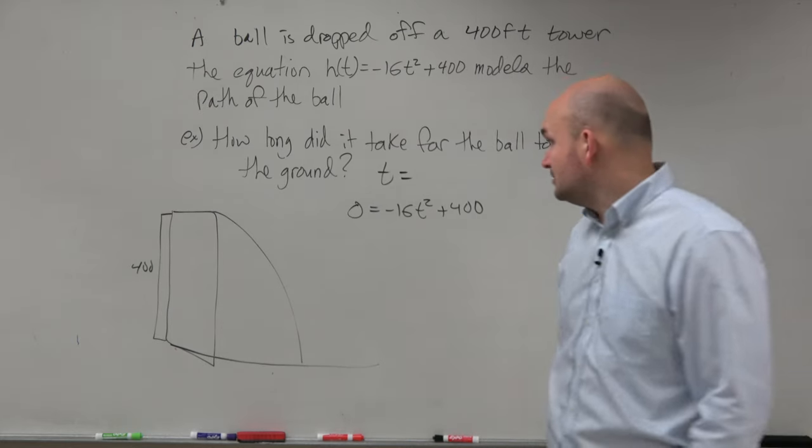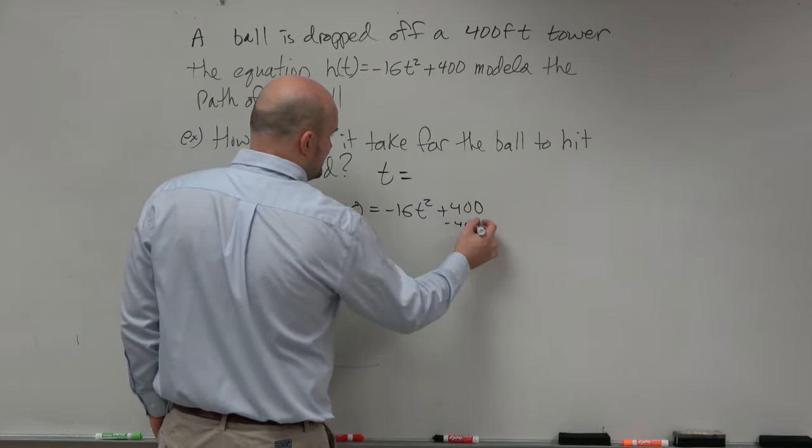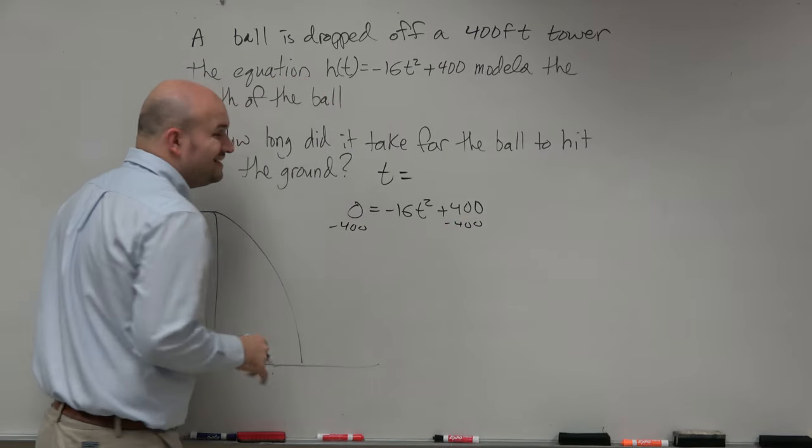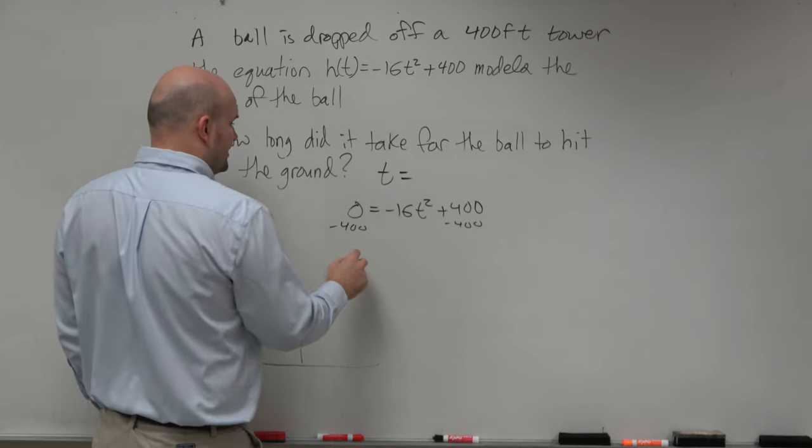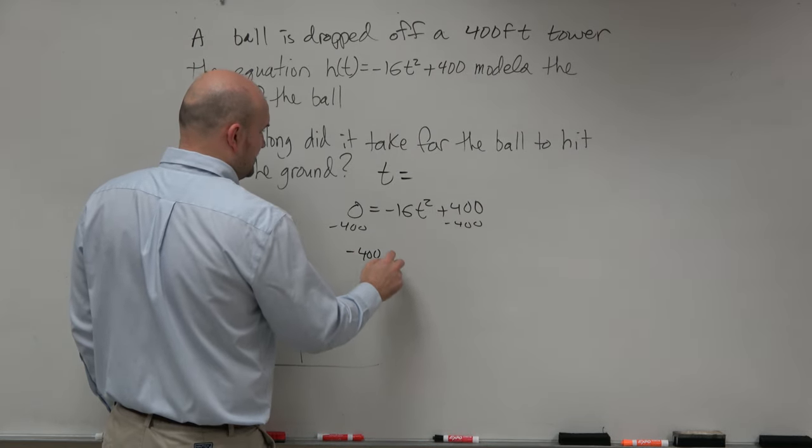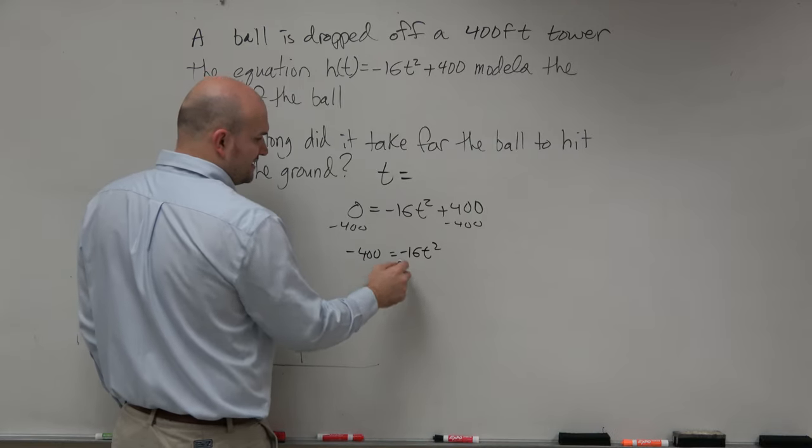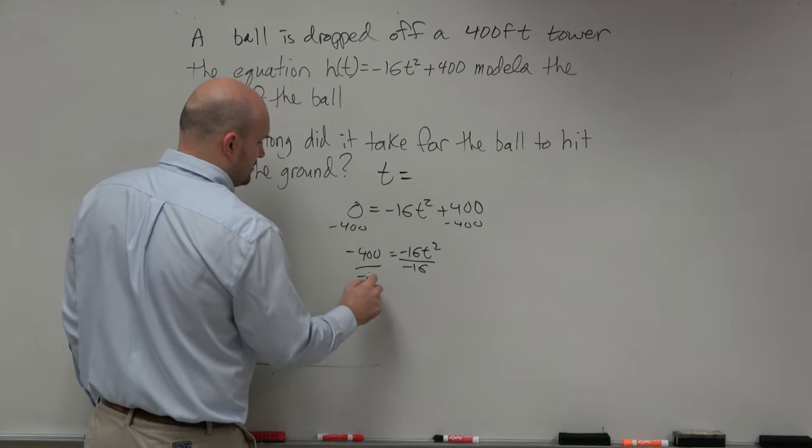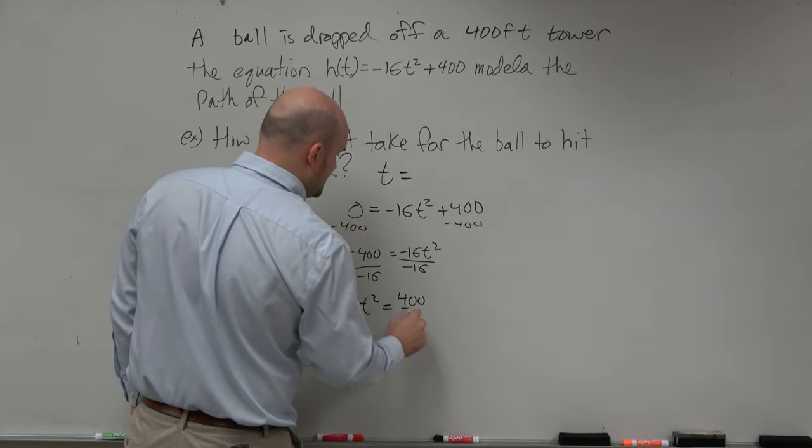0 equals negative 16t squared plus 400. So now, yeah, we've got to go back and do some algebra here. I can go ahead and subtract 400 on both sides. Now, again, we're assuming we don't have a calculator, all right? So a lot of times what I like to do here is don't simplify things, because we know we're going to have to take the square root.